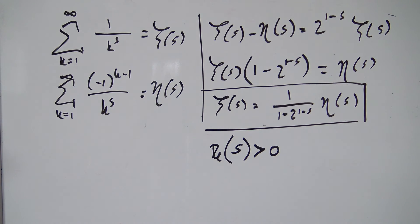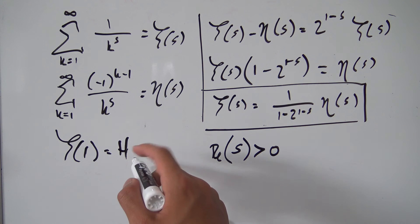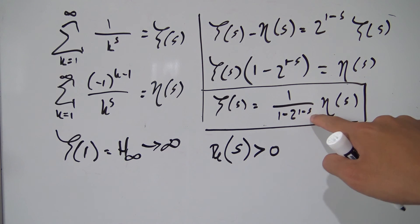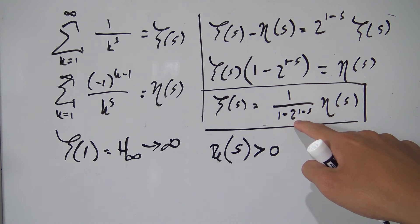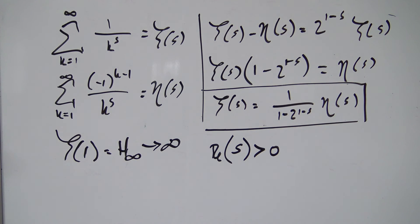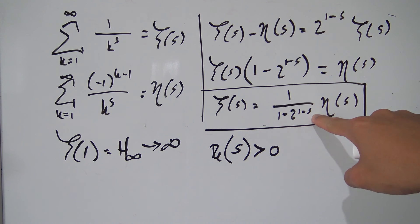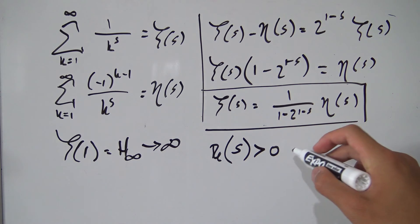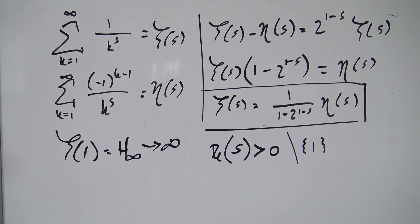This new definition doesn't converge everywhere for real part of s greater than zero — it still has a pole at s equals one. When you plug in s equals one, the denominator becomes one minus two to the zero, which is one minus one equals zero, so we're dividing by zero. This is a pole of order one with a residue of one. So this definition converges for real part of s greater than zero except at s equals one, and in fact when analytically continuing zeta to the whole complex plane, s equals one remains the only pole.